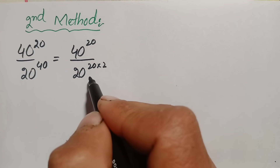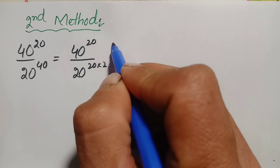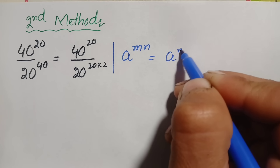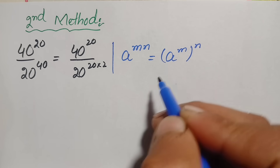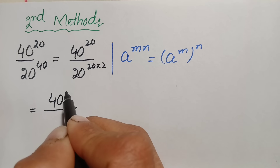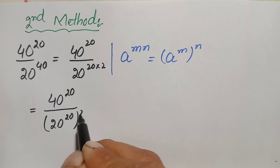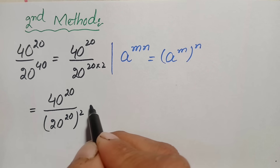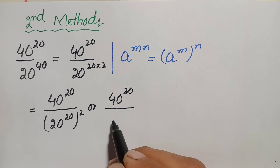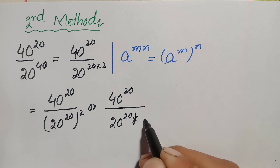In the denominator we use the exponential identity a raised to power m times n, which equals a raised to power m, whole raised to power n. Applying this, the denominator 20 raised to power 40 becomes 20 raised to power 20, whole squared. We can then write this as 20 raised to power 20 times 20 raised to power 20.